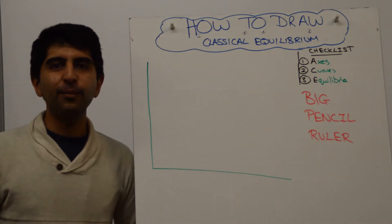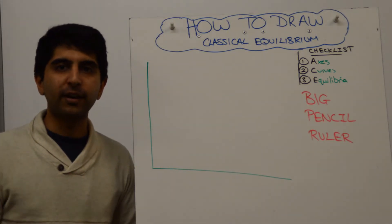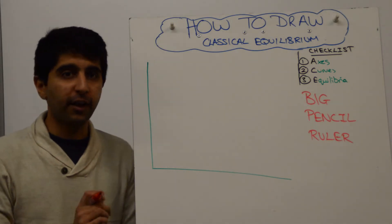Hi everybody! You want to show full employment using the classical model of aggregate demand and aggregate supply. How do you construct this diagram?